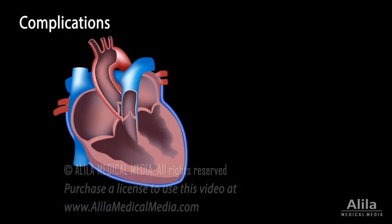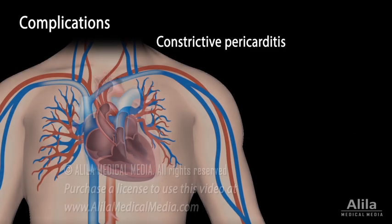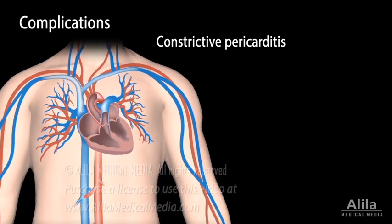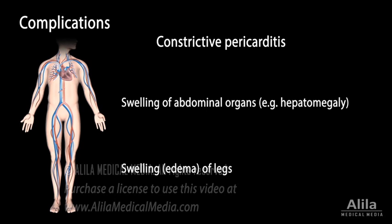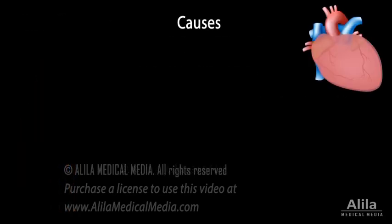Less commonly, chronic inflammation may also result in a thickened and stiffened pericardium, a condition known as constrictive pericarditis. As the stiff pericardium reduces cardiac filling, blood backs up in the body's veins and the lungs where it came from. Peripheral venous congestion leads to swelling of legs and abdominal organs, while an elevated pulmonary pressure results in difficulty breathing.